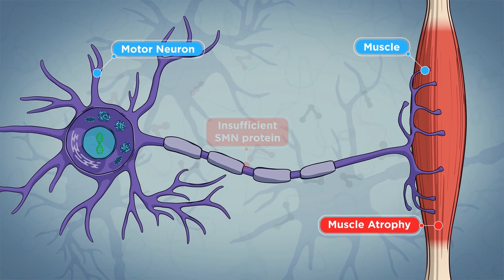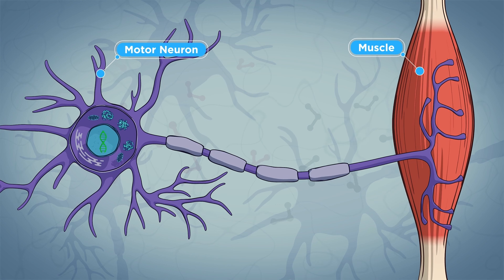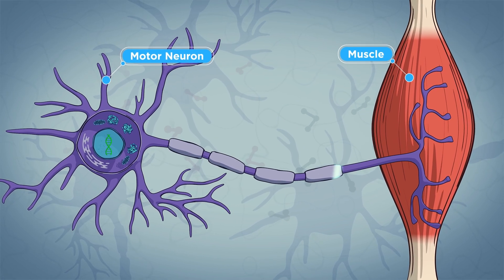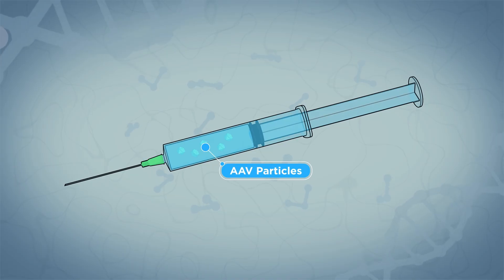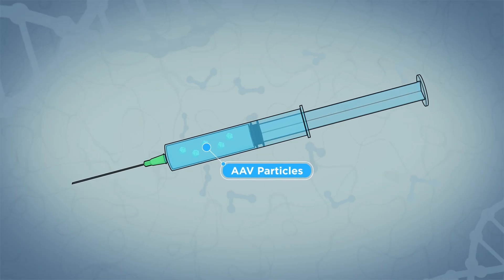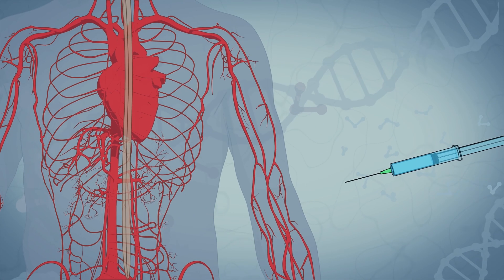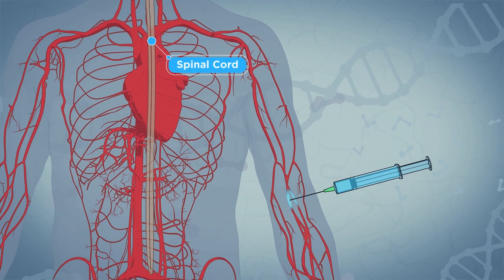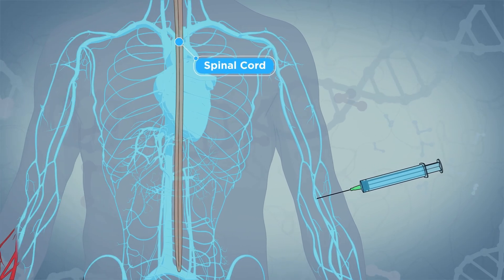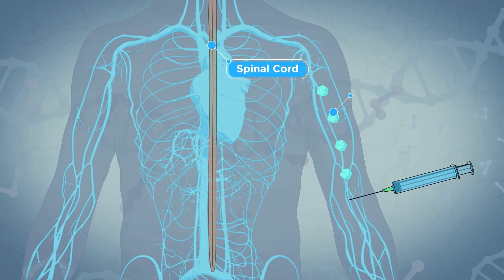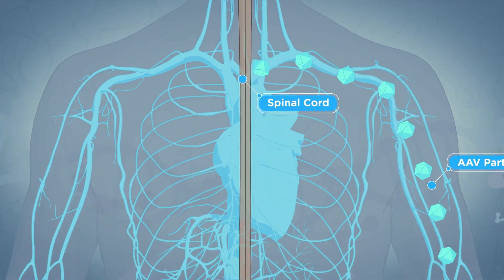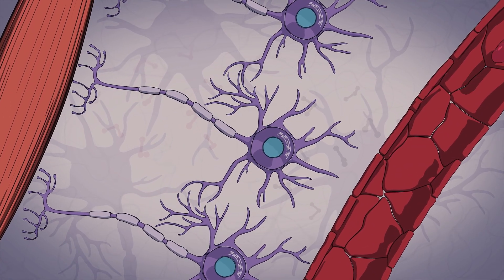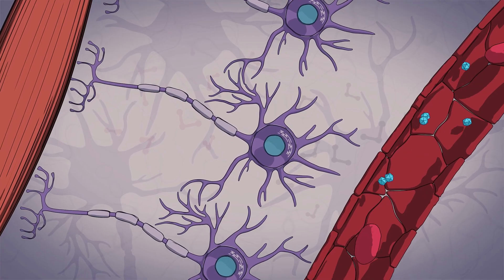In the case of SMA, gene therapy can be used to replace the missing or faulty SMN1 gene. How is the working gene delivered? For any type of gene therapy to work, it needs to be delivered to a person's cells. Sometimes this is done in the person's body — in vivo — and other times this is done by extracting cells from the person, modifying them, and introducing them back to the body — ex vivo.